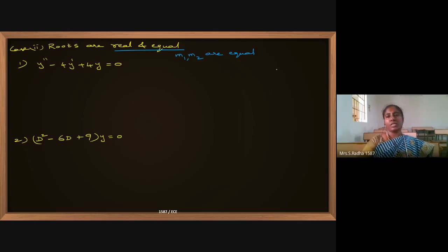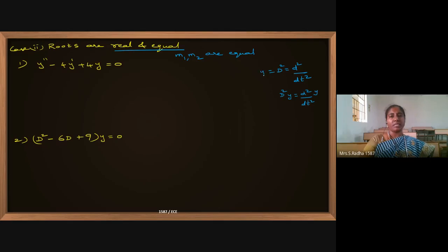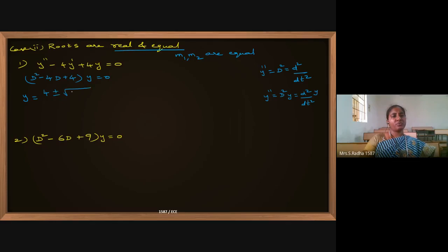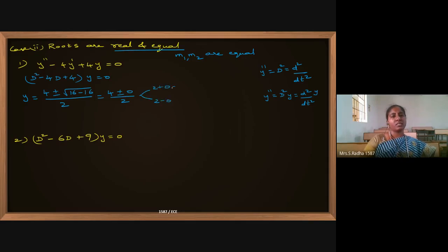D² means d²/dt² applied to the output function y, also written as y-double-dash. We write the equation as (D² − 4D + 4)y = 0. Using the quadratic formula: D = [4 ± √(16 − 16)] / 2 = (4 ± 0) / 2 = 2. Two roots come out from the quadratic equation, both equal.